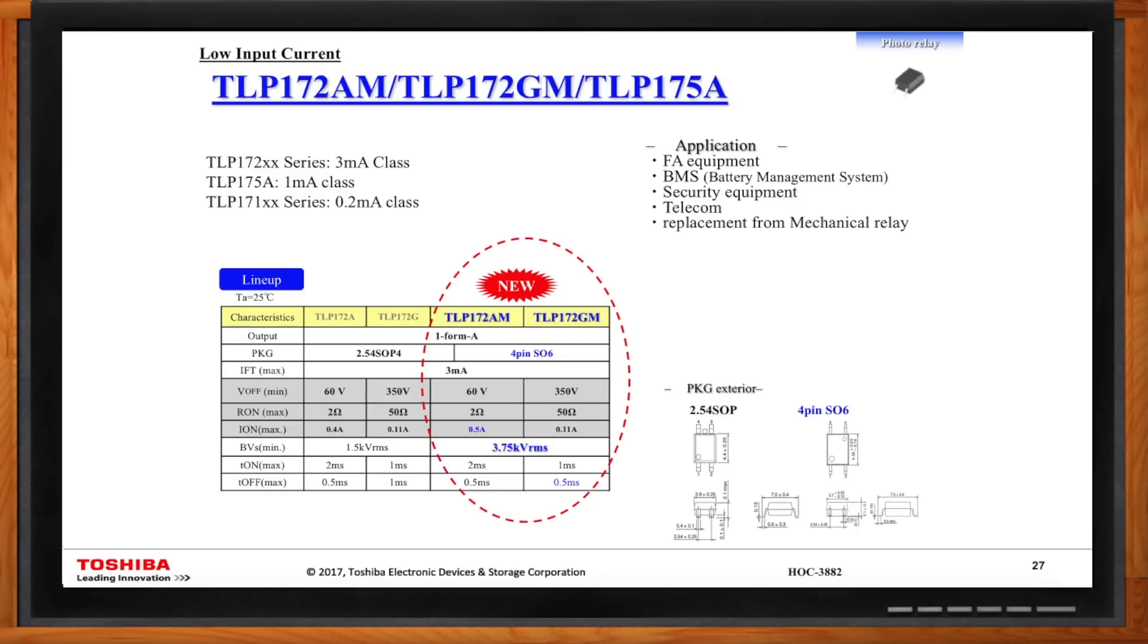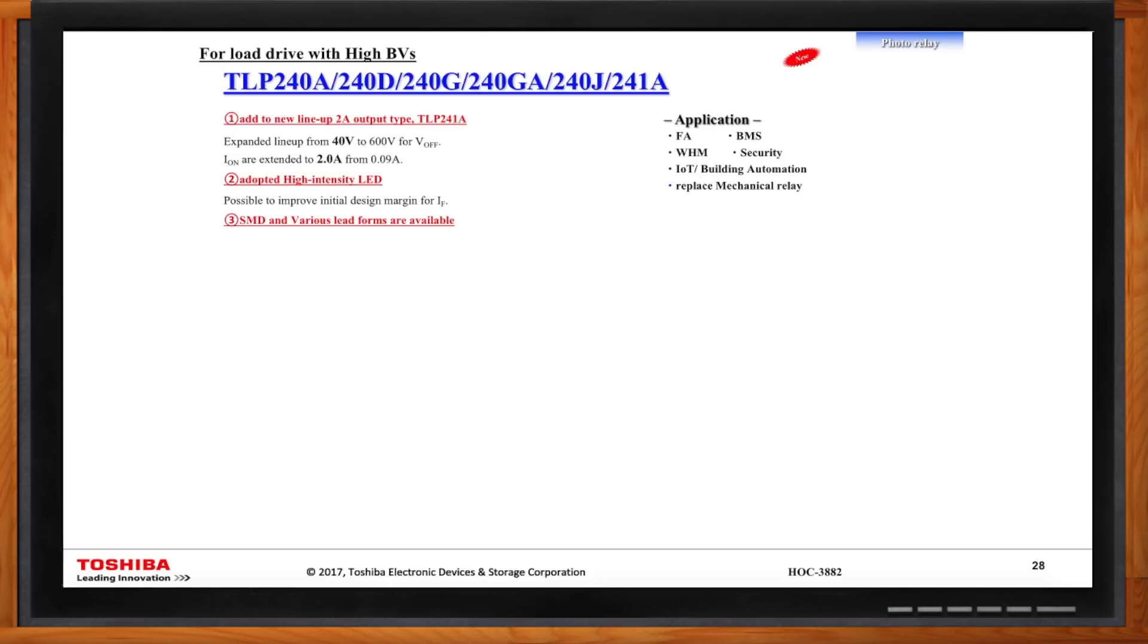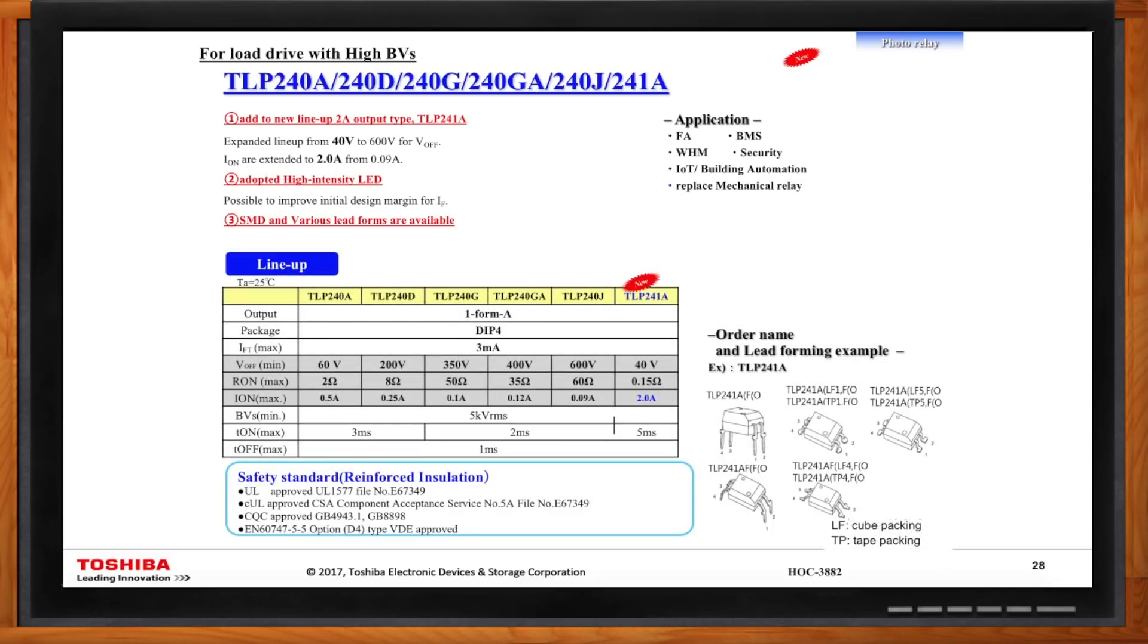So what about high breakdown voltage? I'm not a big fan of sparks and arcs. Yes, high breakdown voltage is definitely important for photo couplers and especially in photo relays. We have the TLP240 series all the way up to 241A series. All of those items in this family have 5,000 volt breakdown voltage, so it should be sufficient to address your requirement.